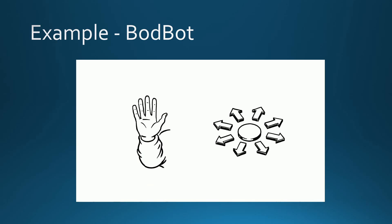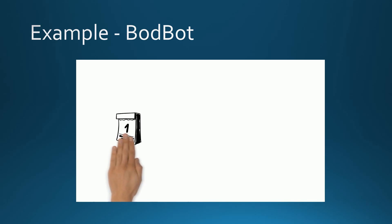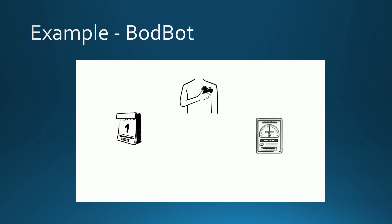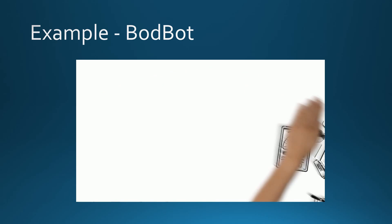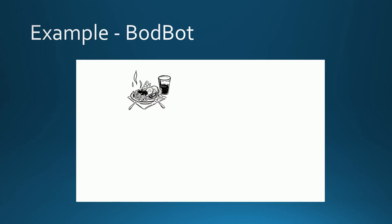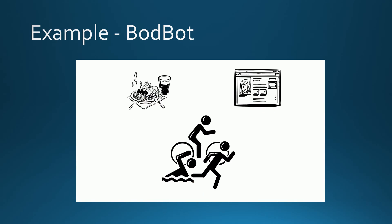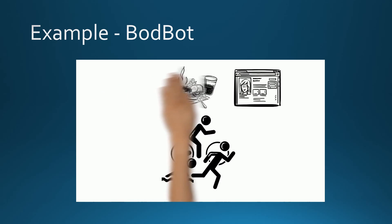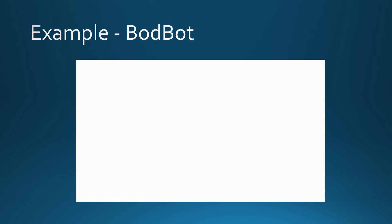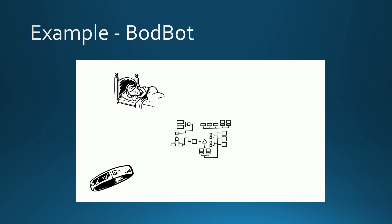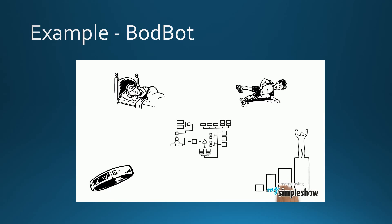Each day BODBOT asks the user how they are feeling and uses that as a gauge to determine how intense the day's workout would be. If the user logs a large amount of food, the application suggests more intense workouts to work off the extra calories. BODBOT's integration with Fitbit also allows it to track your sleep and tailor exercise routines to that. The workouts continually adapt with the user's data and progress.